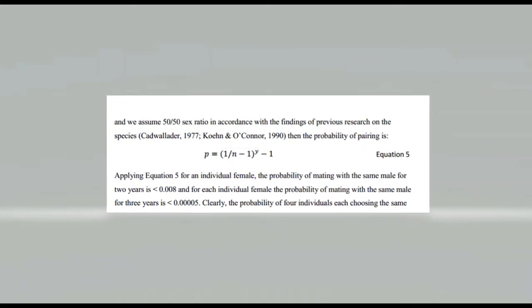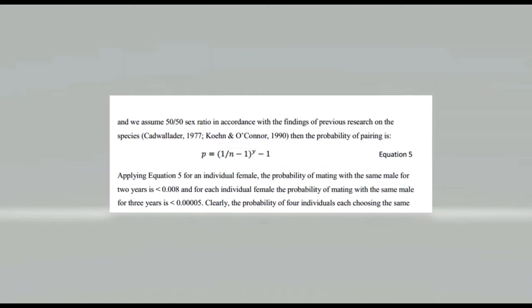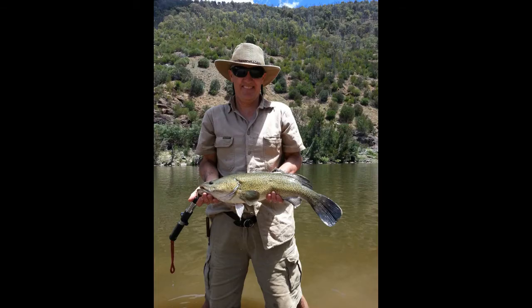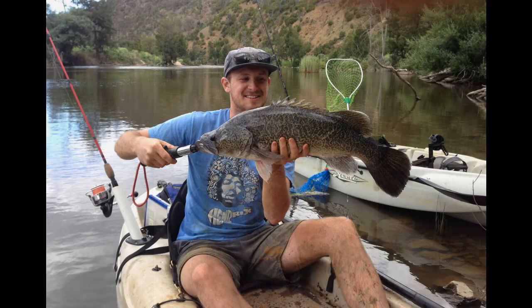Murray Cod are highly sought after by fishers, and so partner fish removed from the system in any year will not be available to mate again in subsequent years. Multi-year pair bonding has been seen in marine fish, but this is the first time it has been seen in freshwater fish anywhere in the world.